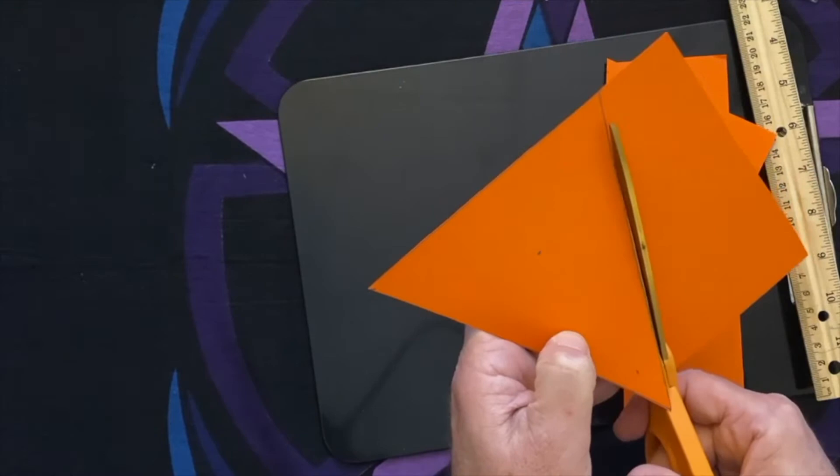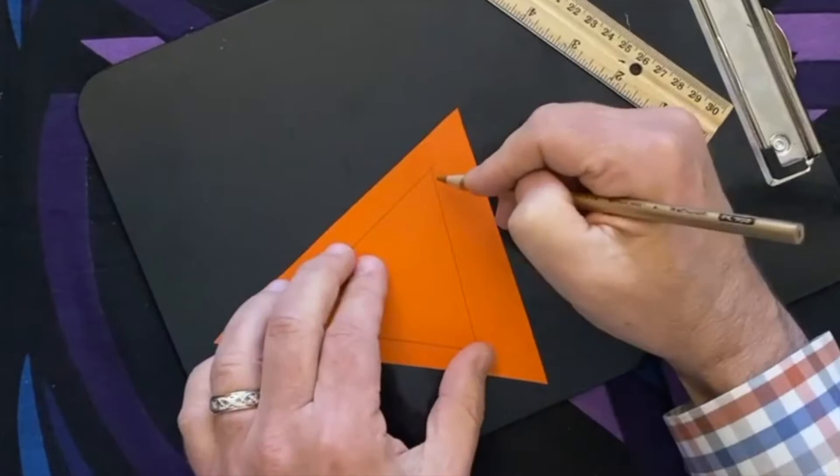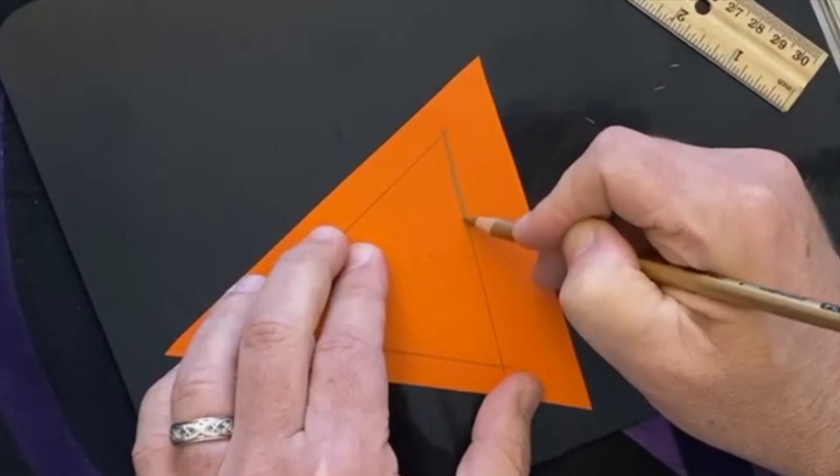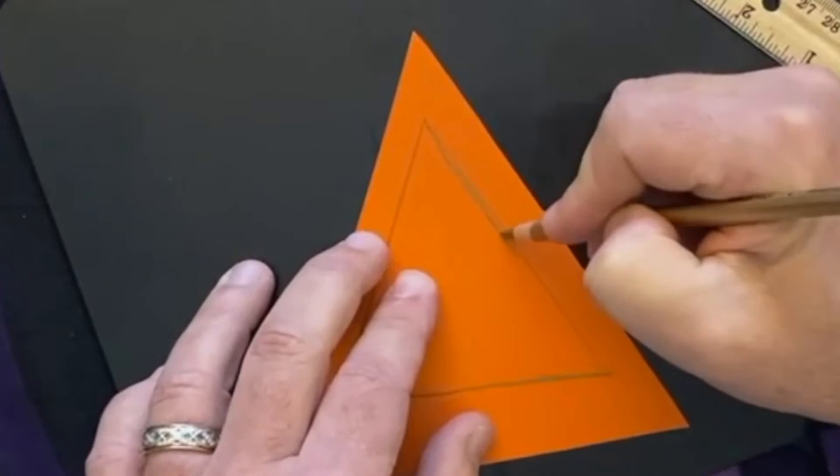Next, we'll take our scissors and actually cut out the triangle. Take your gold pencil, pen, or paint and draw a small triangle outlining the inside of the triangle that you just cut out. You could probably use your protractor for this and make it a lot more accurate than I'm doing here, but I'm just drawing a triangle.